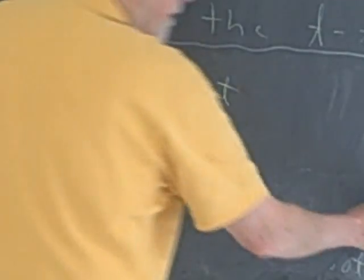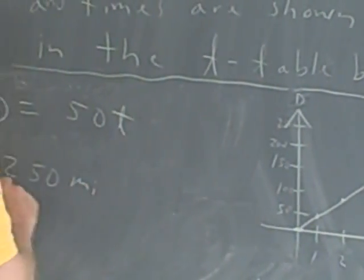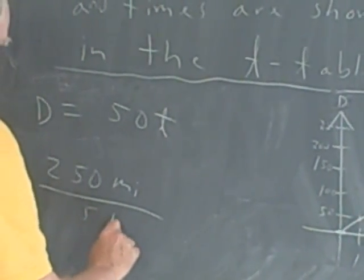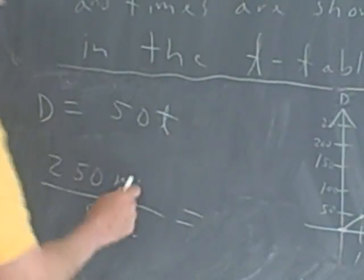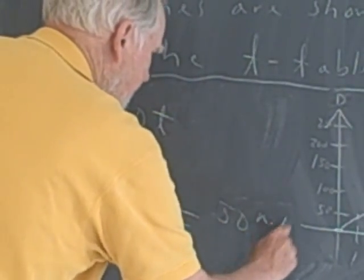Well, we can see that in 5 hours, he covers 250 miles. So it's 250 miles in 5 hours, which gives us miles per hour, and we end up with 50 miles per hour.